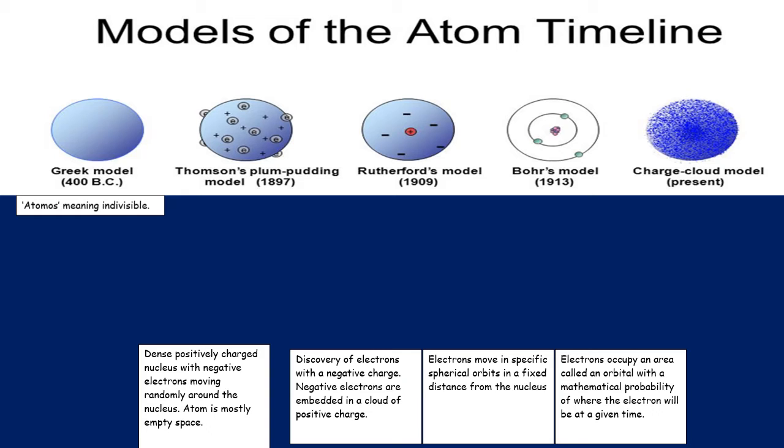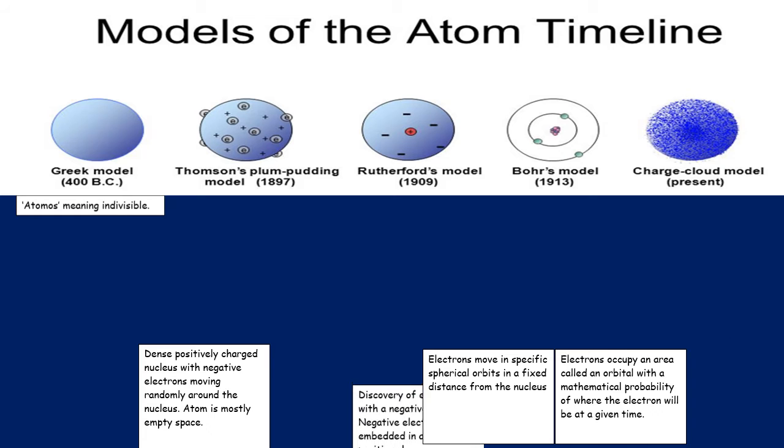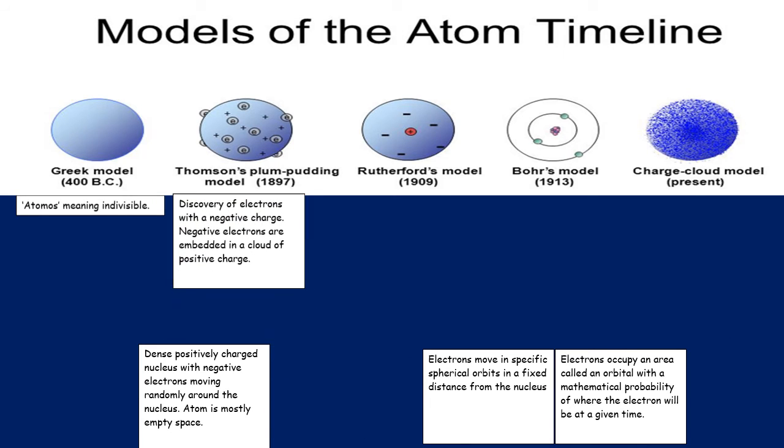And then at GCSE you'll have talked about Thompson's plum pudding model which is the discovery of subatomic particles. The idea that negative charge was found - so this was the discovery of electrons. So electrons had a negative charge and atoms were neutral overall so the rest of the atom was just made up of a positive cloud if you like. We didn't really know what that positive was but it was the discovery of electrons.